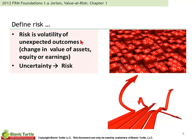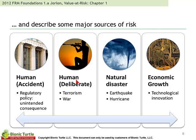Defining risk. Risk is the volatility of unexpected outcomes. Sometimes we say risk is about the art and science of translating uncertainty into something that we can measure. Jorian describes major sources of risk. There's nothing magic about his typology, and nothing particularly testable about this — it's just a starting framework.